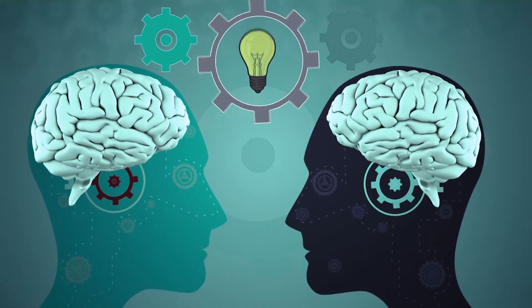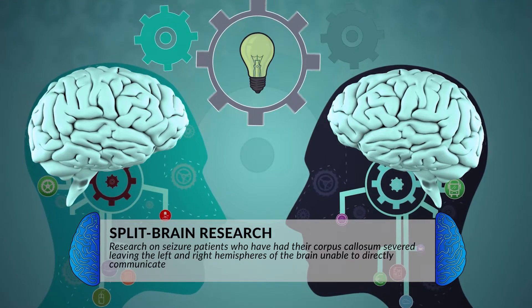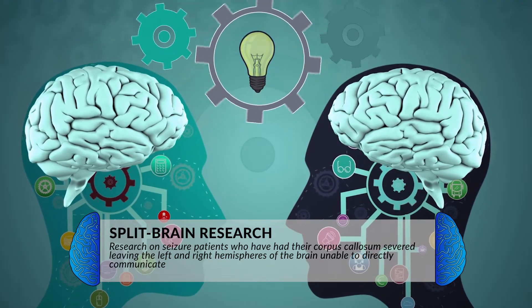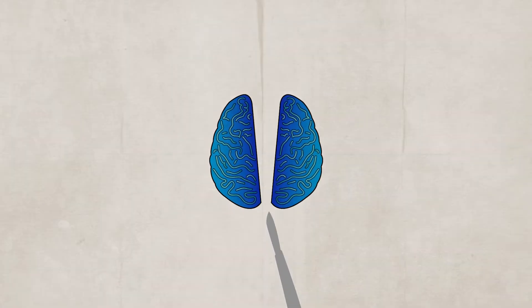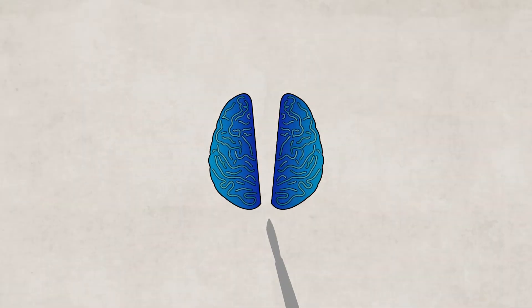One type of research you'll want to understand is split-brain research, done by Roger Sperry and Michael Gazzaniga. The split-brain procedure has been done to help treat people with severe epilepsy. The procedure cuts the corpus callosum, which connects the left and right hemispheres of your brain. When the corpus callosum is cut, the right and left hemispheres can no longer communicate. By studying split-brain patients, researchers noticed there was no impact on an individual's personality or intelligence, and the procedure allows researchers to better understand the different functions of each hemisphere.